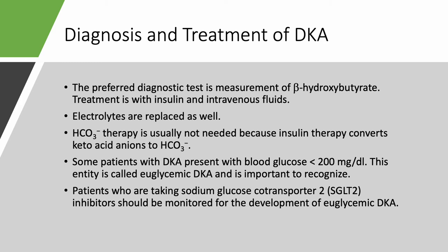Some patients present with euglycemic DKA where glucose is below 200. If you're suspecting DKA in a diabetic patient with an unexplained anion gap, check beta-hydroxybutyrate. Patients taking SGLT2 inhibitors should be monitored for euglycemic DKA. A case on this topic will be presented in the next lecture.